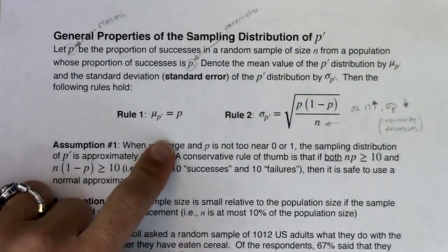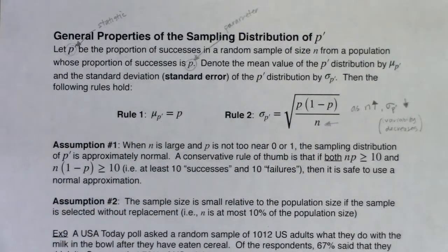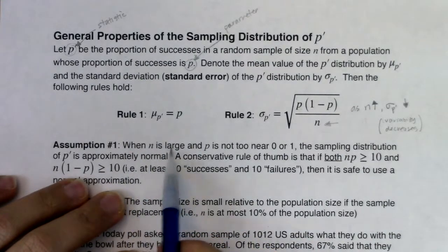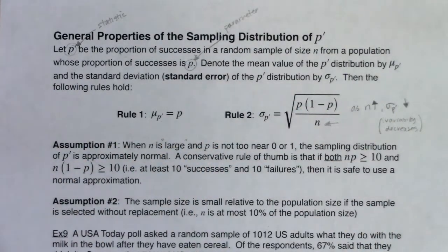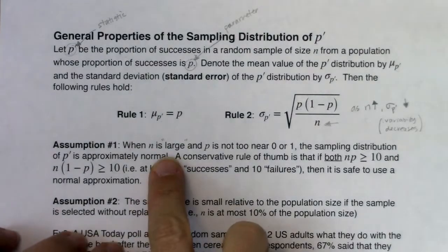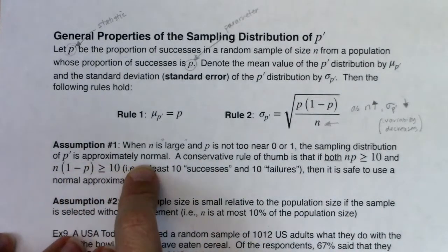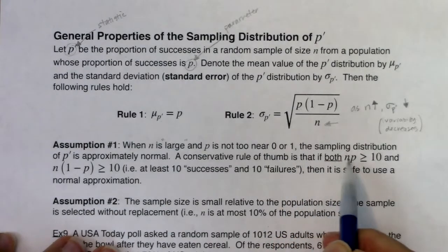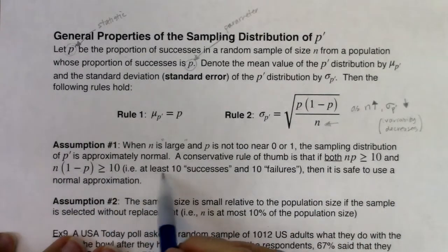These rules govern the center and the standard error of our sampling distribution. Now the fun kicks in: normality. Normality is tricky to calculate. When n is large — and 'large' means something very different in proportion land than in mean land — and p is not too near zero or one, the sampling distribution of p-prime is approximately normal. A conservative rule of thumb is that if both n·p ≥ 10 and n·(1−p) ≥ 10, then it's safe to assume a normal distribution. Both of these things must happen.